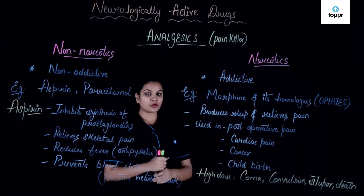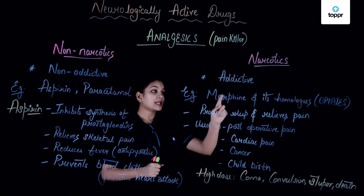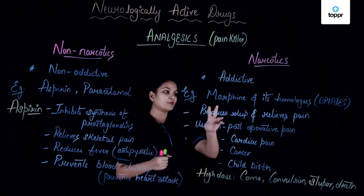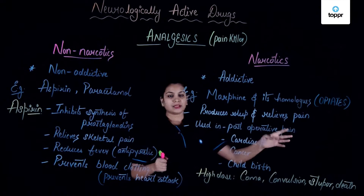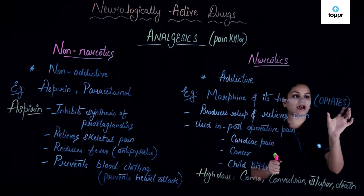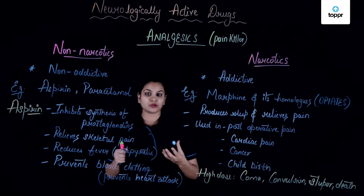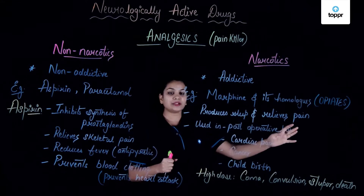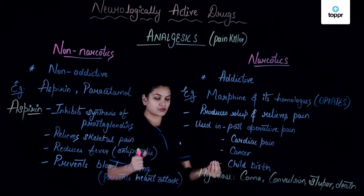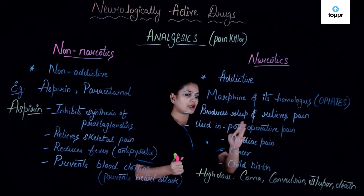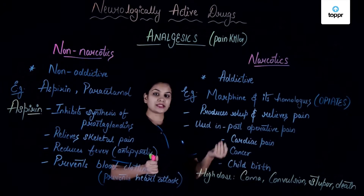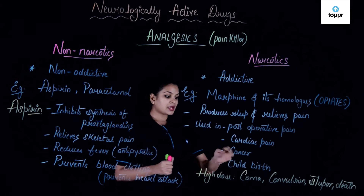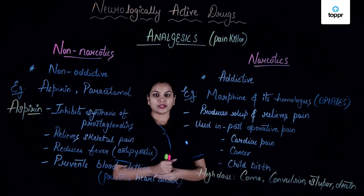Moving forward, let's look at narcotic analgesics. These are addictive — if taken multiple times, they become habit-forming. Examples are morphine and some of its homologs, commonly called opiates as they are extracted from opium. They produce a sleep-like feeling and also relieve pain. They are usually used for post-operative pain after surgeries, and can also be used for cardiac pain, cancer pain, and during childbirth.